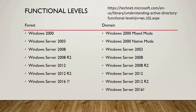I want to quickly talk about what the functional levels are. Basically, the functional level identifies the capabilities of the domain and the forest. You have a functional level for the entire forest and a functional level for each domain. Every domain controller within a domain must be at the same functional level, and domain controllers within the forest must be at least at the forest level equivalent.